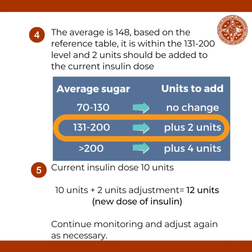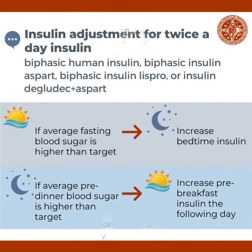Therefore, two units should be added to the current insulin dose. The patient was on 10 units of insulin glargine. 10 units plus a 2-unit adjustment dose equals 12 units — 12 units would be the new insulin dose. Continue monitoring your fasting blood sugar and adjust your insulin dose as necessary.